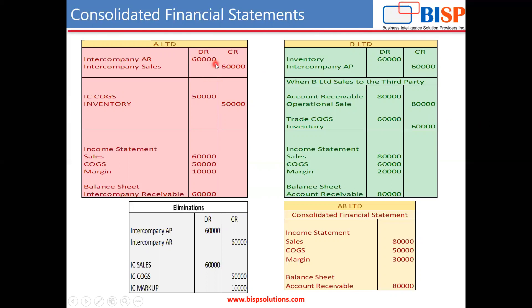The cost of goods sold for selling the transaction to B Limited is 50,000, and they had credited the inventory by 50,000. In the books of A Limited, the income statement will report sales of 60,000 and cost of goods sold of 50,000, so their net income will be 10,000. On the balance sheet they will display a receivable of 60,000.